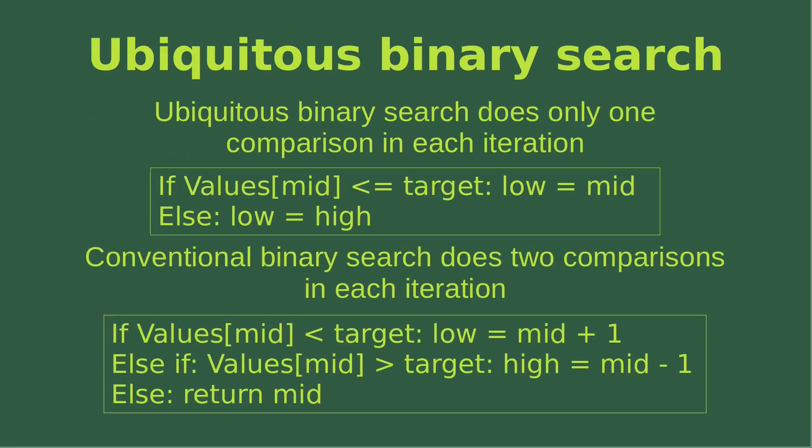Now let me talk about the difference between the ubiquitous binary search process and the conventional binary search process. The ubiquitous binary search process has only one comparison in each iteration, shown in the first box on screen with only one if statement. On the other hand, a conventional binary search process, shown in the second box, has two if statements involved.